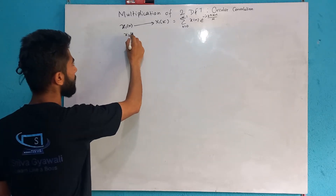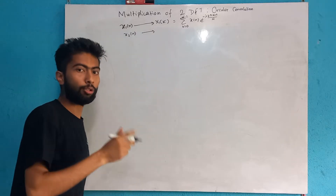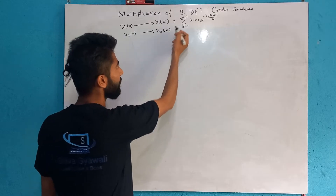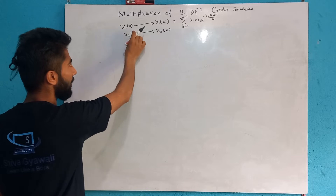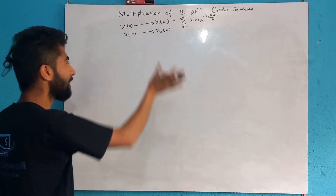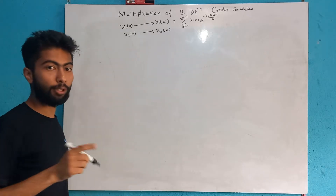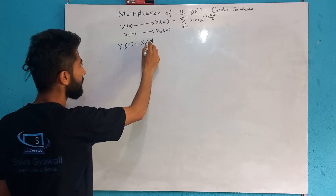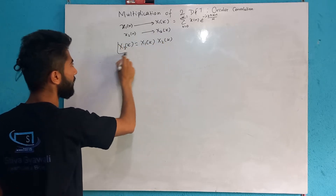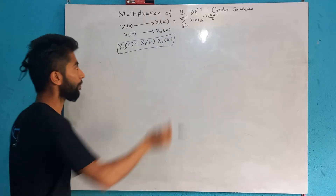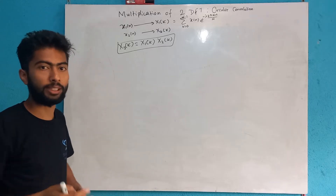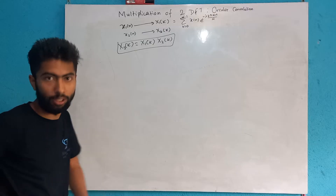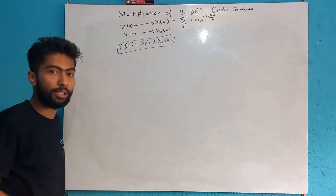Similarly there is X2[n], and these are already important fields. If it can be written that X3[k] equals X1[k] times X2[k], so the definition is given. The values are assumed. Now this is the power of given: X3[k] equals X1[k] times X2[k], where X3[k] is in the DFT domain.